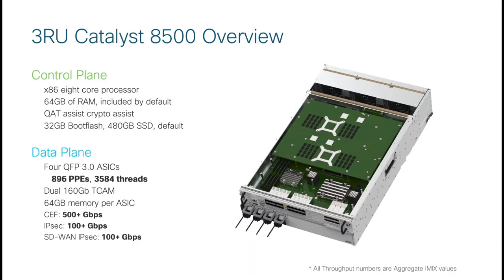The control plane of the platform is based on an 8-core x86 architecture with its own dedicated 64 gigabytes of memory. The x86 ASIC provides QAT assistance to expedite negotiation of IPSec and MACSEC sessions. 32 gigabytes of boot flash and a 480 gigabyte SSD drive are included by default. The SSD drive can be used as storage for applications running on cores made available from the x86 ASIC, such as running 1000v instances in the services plane. The net result is that the C8500 20X6C is the fastest enterprise routing platform to date, delivering 500+ Gbps of CEF forwarding and more than 100 Gbps of IPSec forwarding with iMix traffic.